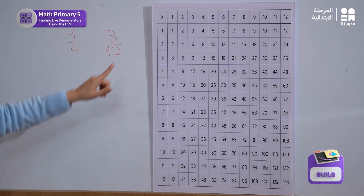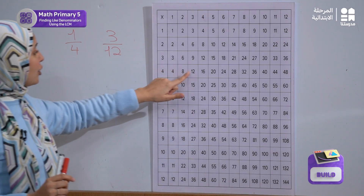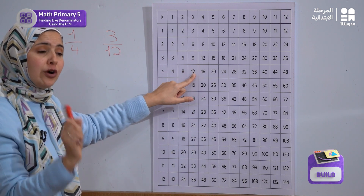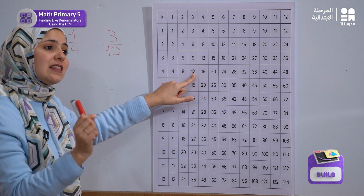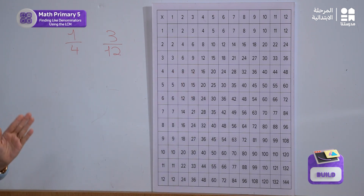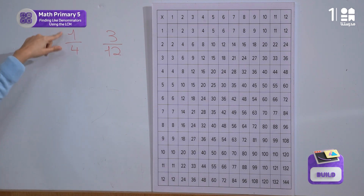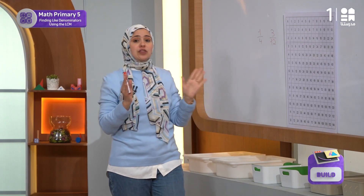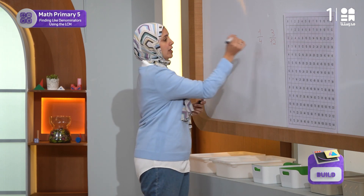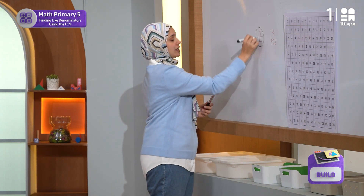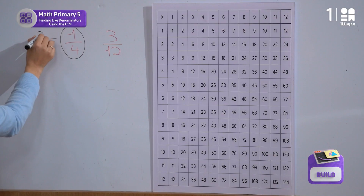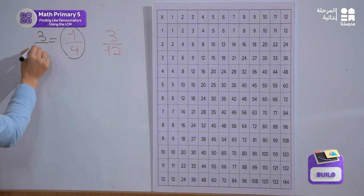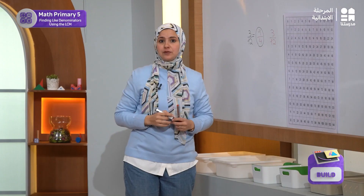And because 12 is the third multiple of 4, then the numerator will be the third multiple of 1, which is 3. So the new fraction that we are going to write, equivalent to this, is equal to 3 over 12.